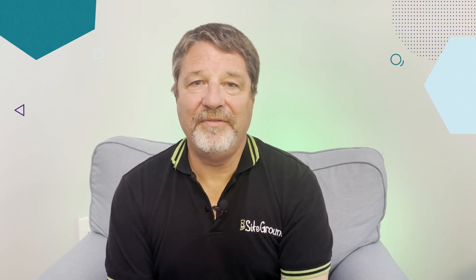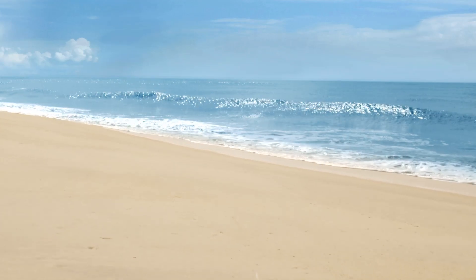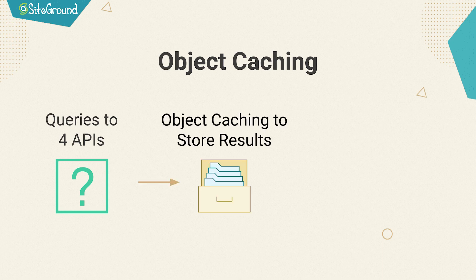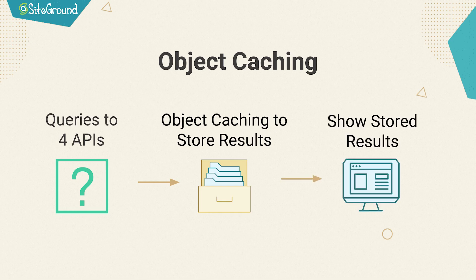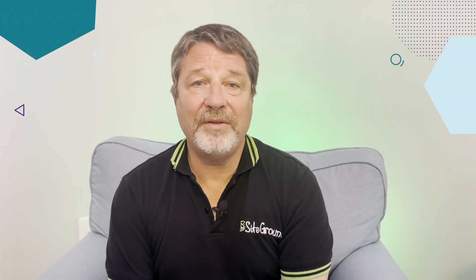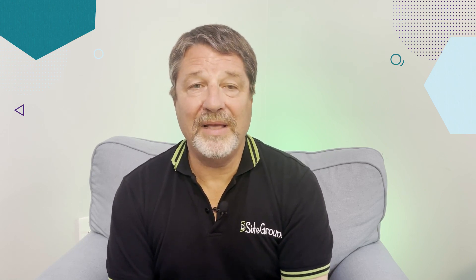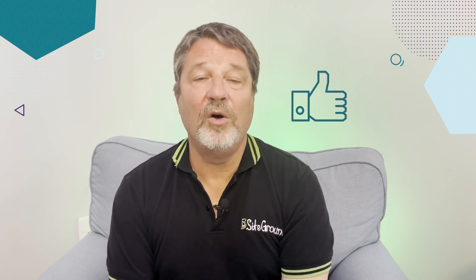There are a lot of things that can benefit from object caching. For example, on one of my websites, I want to show the high tide and weather information for a specific site that scuba divers like to dive. To do this, I have to make queries to four different APIs. Weather information doesn't really change that much, so once I have the results from those four APIs, I use object caching to store those results. Then, for the rest of the day, I use my locally stored copies of that information. My site runs faster because I'm not having to wait on the APIs to return, and I don't put unnecessary load on the servers running the APIs, so they can serve more sites like mine. It's really a win-win.